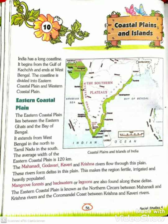'Extends' means to cover the area. So the Eastern Coastal Plain covers the area from West Bengal in the north to Tamil Nadu in the south. The average width of the Eastern Coastal Plain is 120 kilometers. 'Width' means the amount something measures from one side to the other edge.